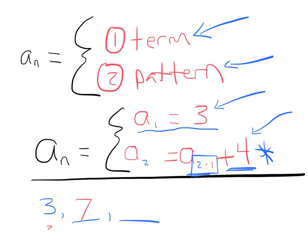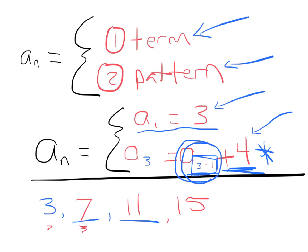To find the third term, I take term number two and add four. Term two was seven, so seven plus four equals eleven. Then I take eleven and add four to get fifteen. Then I take fifteen and add four to get nineteen. And I keep going this way as long as I want.